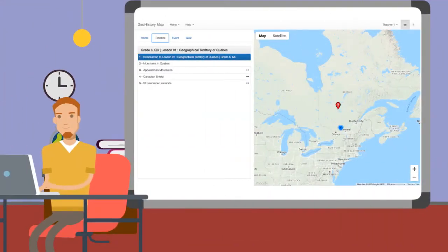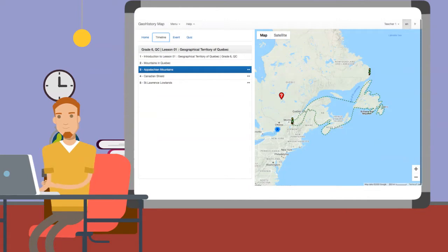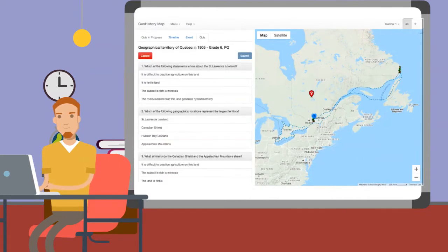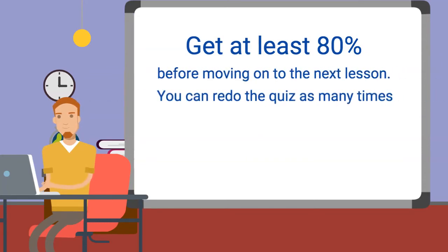Now you can go and click on the next four elements, taking time to read all the information. Once you have read the information, you will be able to answer the questions on the quiz. The quiz will help you see what you have learned. You should get at least 80% on the quiz before moving on to the next lesson. You can redo the quiz as many times as necessary.